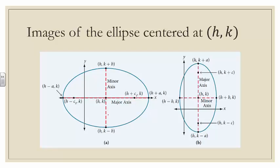Take a look at some images of ellipses centered at h, k. Here on the left, we have an ellipse centered at the generic point h, k. On the right, we can see that the major axis is horizontal and the minor axis is vertical. On the right, we have an ellipse with major axis vertical, minor axis horizontal, at that same point h, k — noticing the different shapes these ellipses take when horizontal versus vertical.